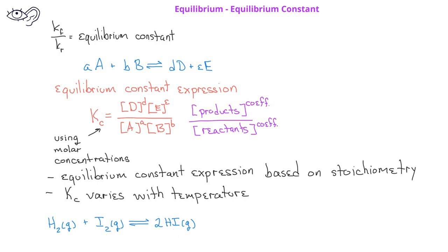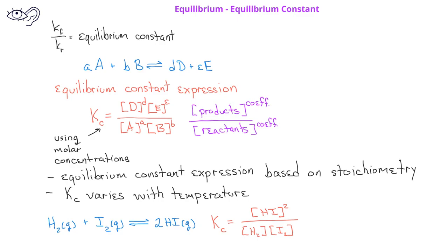In order to write the equilibrium constant expression, we write Kc equal to the concentration of the products raised to their coefficient. In this case, the product is hydrogen iodide, and we take that concentration squared, since the coefficient of hydrogen iodide is 2. In the denominator, we have the concentration of hydrogen to the first power and the concentration of iodine to the first power, because each of those two reactants has a coefficient of 1 in the balanced chemical equation.